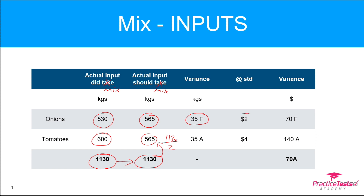We multiply that by the standard price — because this isn't a price variance, it's always valued at standard, just like usage variances. That gives us a $70 favorable variance on onions. For tomatoes, we used 600 kilos against a standard mix of 565, so we're 35 over, and they're more expensive at $4, giving us 35 × $4 = $140 adverse. Overall, we have an adverse mix variance because we're using more of the more expensive ingredient.